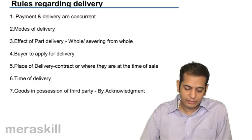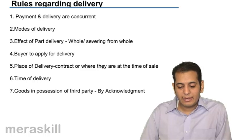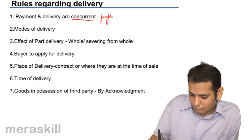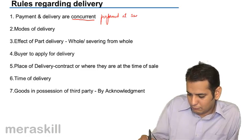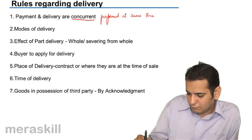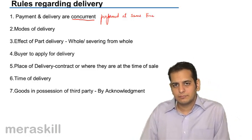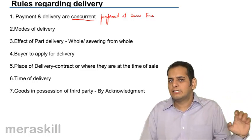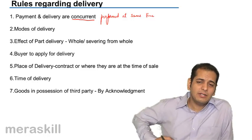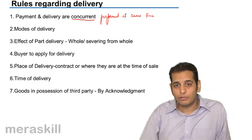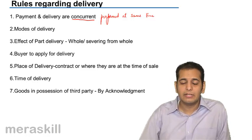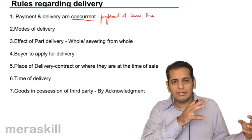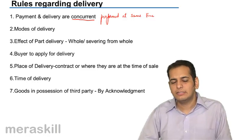Now, rules regarding delivery. The first rule is: payment and delivery are concurrent — they must be performed at the same time. Unless and until the buyer is ready for payment, the seller is not required to deliver the goods. Similarly, unless and until the seller is ready for delivery, the buyer is not required to make the payment. Both have to do these things simultaneously.